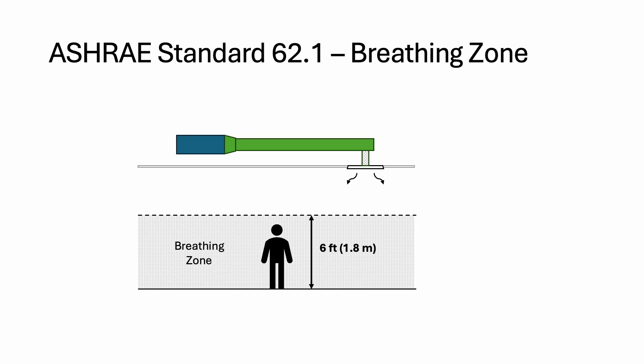Diffusers are designed to spread out the airflow and make sure the air is not moving too fast. They need to reduce the air velocity from 1500 feet per minute down to 100 feet per minute.